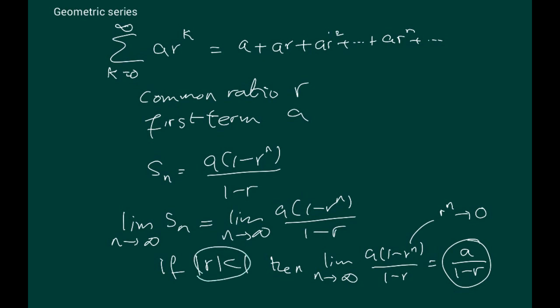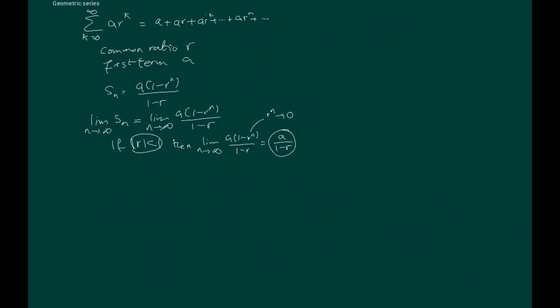So let's look at an example. Here's an example of a geometric series: k equals 2 to infinity of 5 times (1/3)^k. This is a geometric series with the common ratio 1/3, so r here is 1/3.